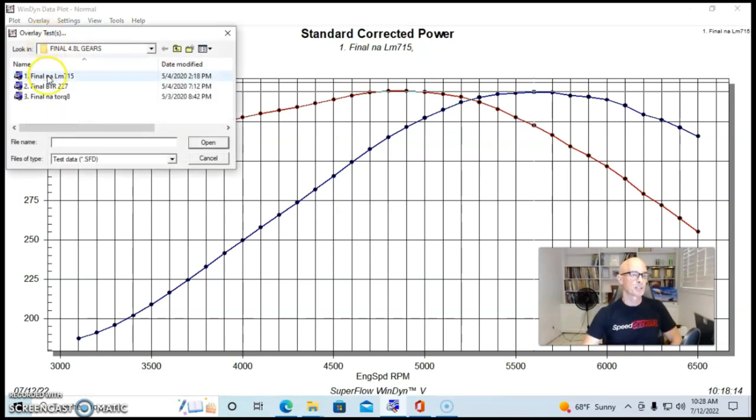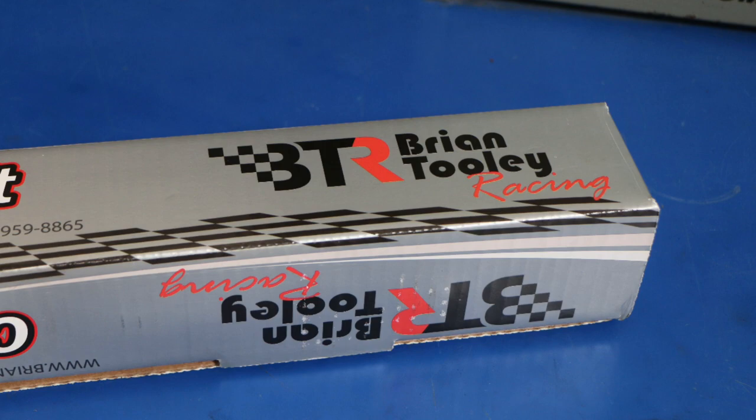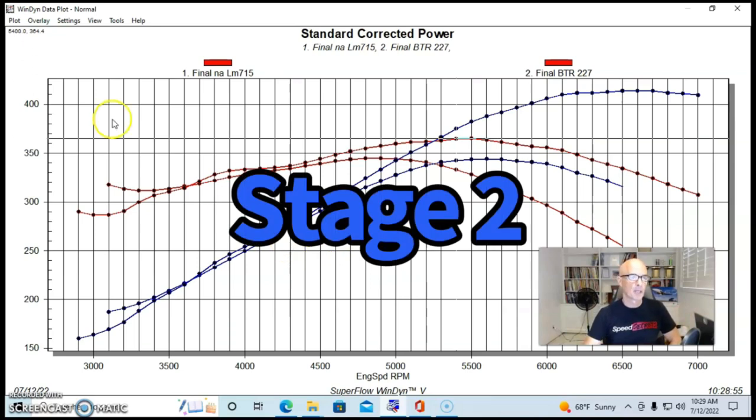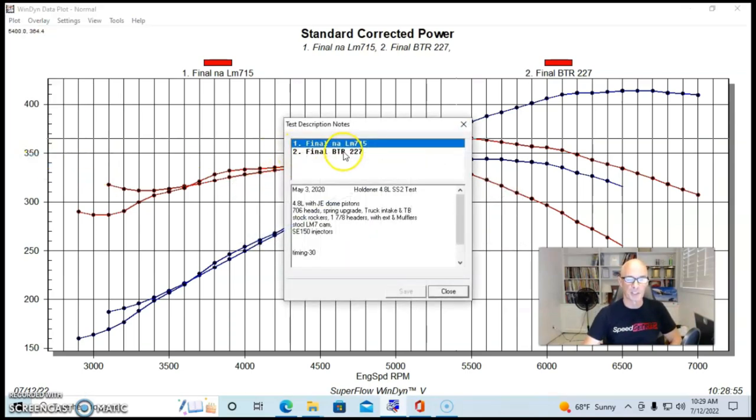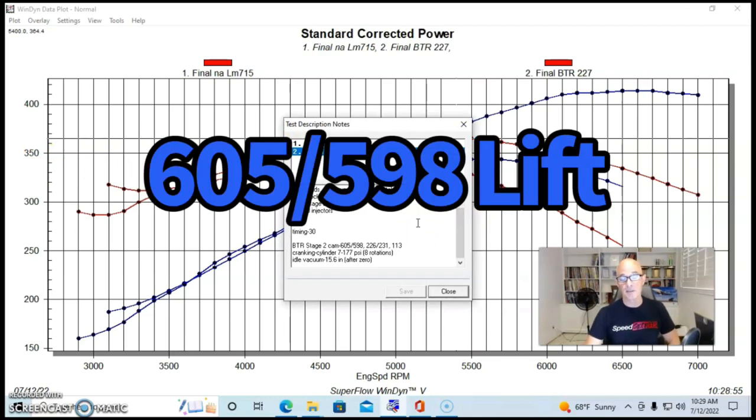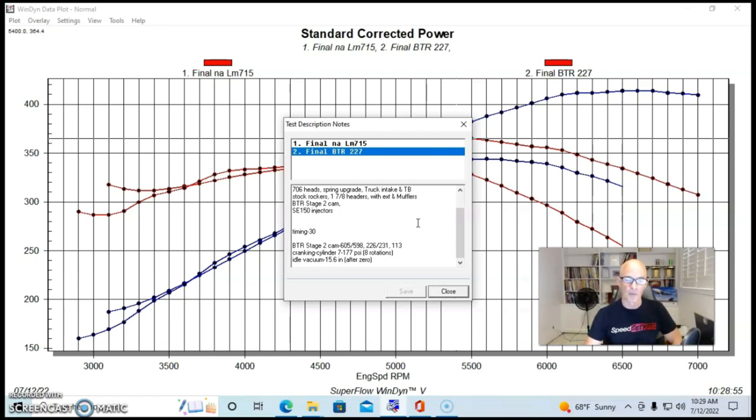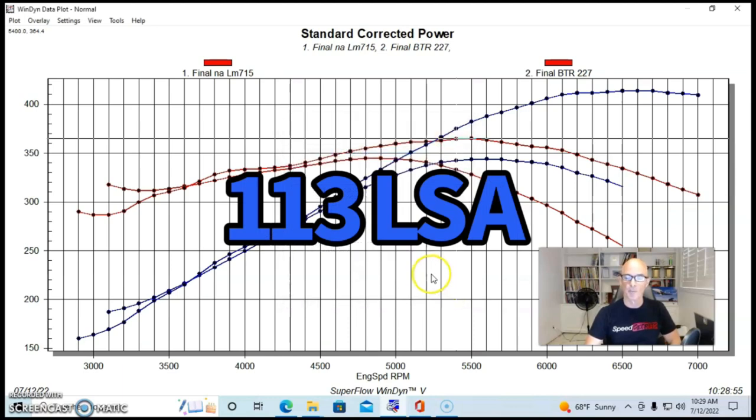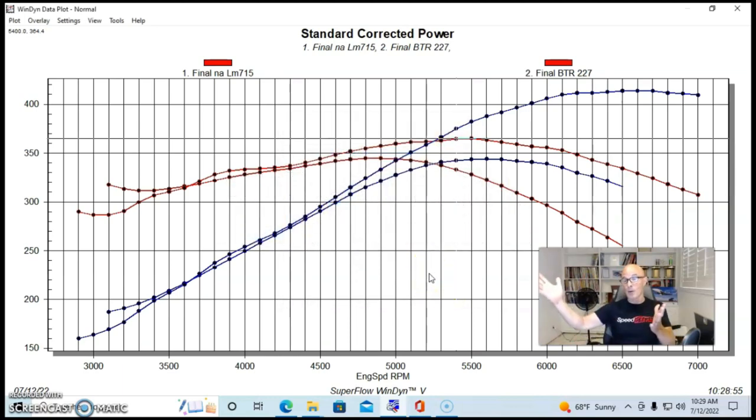This would be more telling had we run it even lower, but here's what happened when we installed a Brian Tooley Racing stage two turbo cam. Because we were running a turbo, we ran a turbo cam, but every cam is a turbo cam. This one works well and makes lots of power. It's fairly mild, only a stage two. It is a 605-598 lift split, obviously much bigger than the factory LR4 camshaft, 226, 231, and 113 degree lobe separation angle.